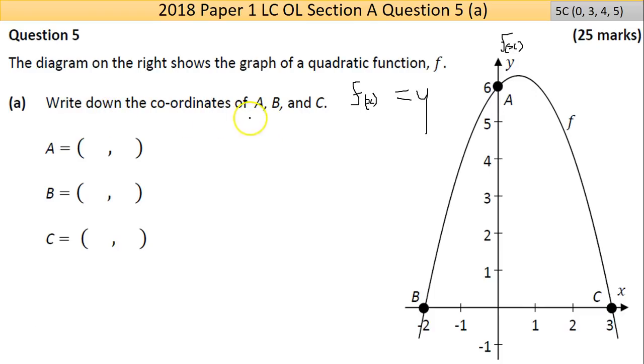Now it says write down the coordinates of A, B and C. So you have your f(x) term, or point, or more appropriate you'd call it x and y. But again, f(x) and y are equivalent. Let's look for A. What A is on the y axis, so we know that x is zero. How far up does it go? It goes up as far as six. So zero, six.